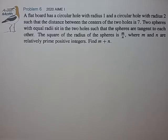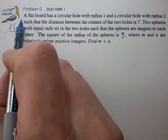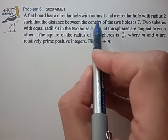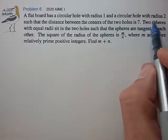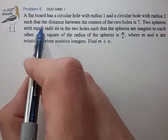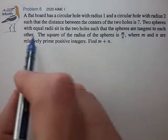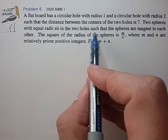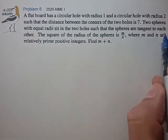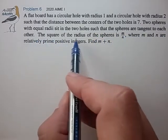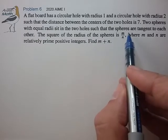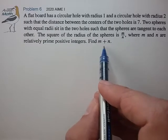Hi, here's problem 6 from the 2020 AIME I. A flat board has a circular hole with radius 1 and a circular hole with radius 2, such that the distance between the centers is 7. Two spheres with equal radii sit in the two holes such that the spheres are tangent to each other. The square of the radius of the spheres is the reduced fraction m over n. Find m plus n.